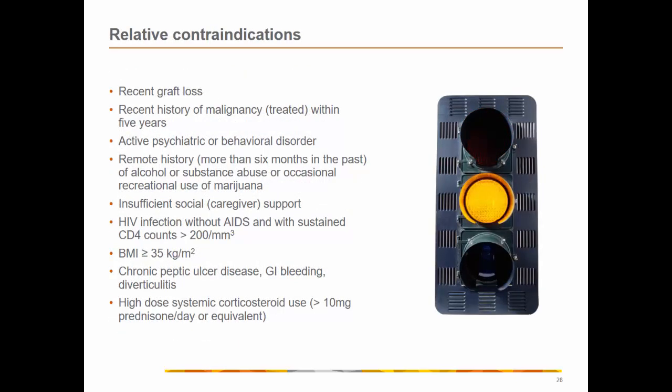Relative contraindications include: recent graft loss or prior rejection; recent history of malignancy within five years; active psychiatric or behavioral disorder; remote history — more than six months — of alcohol or substance abuse; insufficient social caregiver support; HIV infection without AIDS; obesity with BMI greater than or equal to 35; chronic peptic ulcer disease, GI bleeding, or diverticulitis; and high-dose systemic corticosteroid use before transplantation.